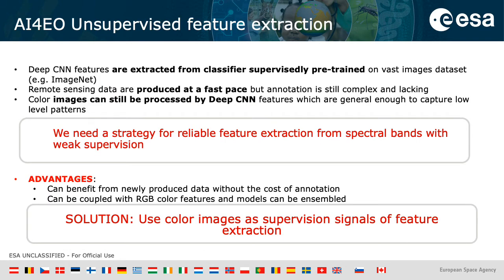This third contribution is, in my opinion, the most innovative one. Deep CNN features are typically extracted from classifiers pre-trained supervisedly on manually annotated datasets. This is not the case in remote sensing, where data are produced at a fast pace but annotations are extremely costly, so we have far fewer annotations than data.